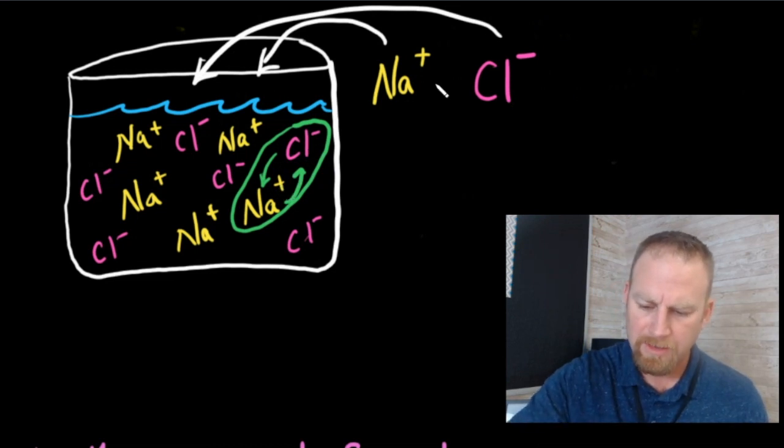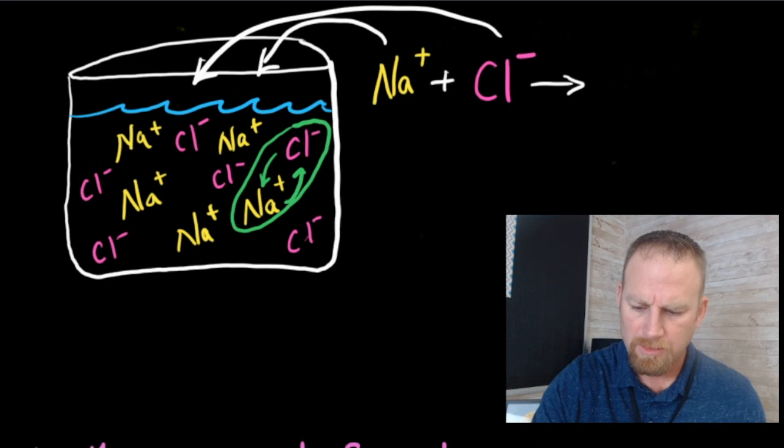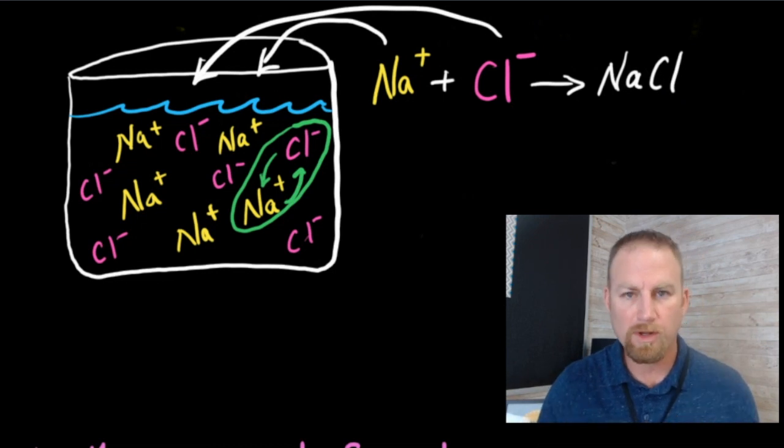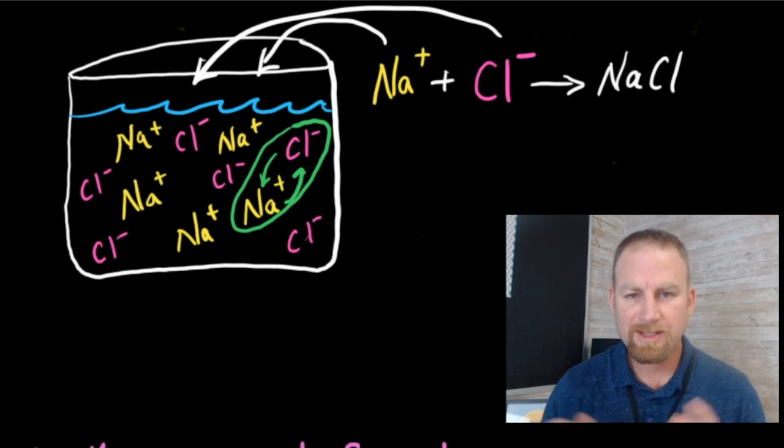So if we write that up here, a lot of times you'll see a problem like this and it'll say, you have sodium and chlorine, what's the resulting formula? Well, in this case, we can see the resulting formula is going to be NaCl. There are no numbers or subscripts that go along with that formula because it's a one to one ratio. It's one plus one minus together that equals zero. So that's an easy example. Let's take a look at a little bit more complicated example.